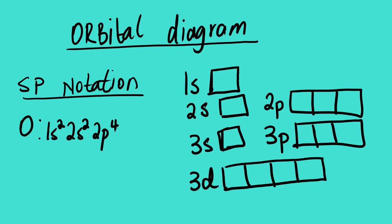Comparing the two notations, on the SP notation, we know that the exponents represent the number of electrons or the atomic number. We know that oxygen is element number 8. It has 8 electrons and 8 protons. Now, how can you represent the orbital diagram of oxygen?